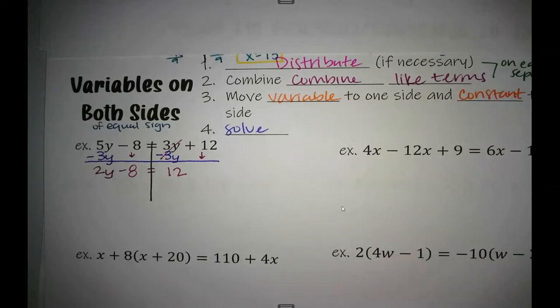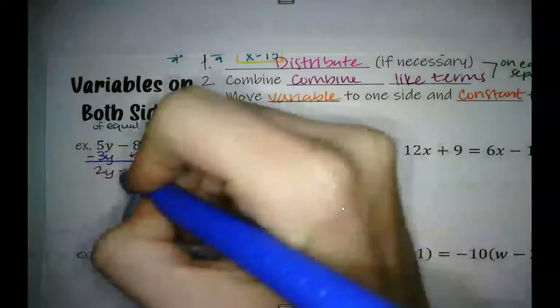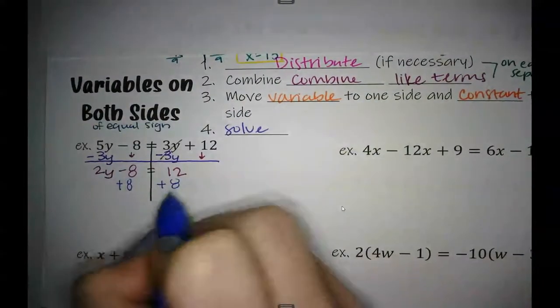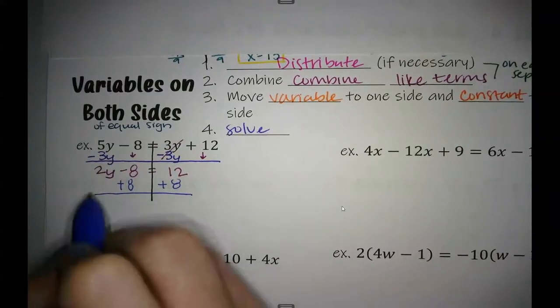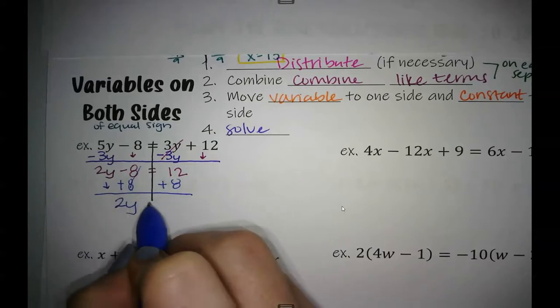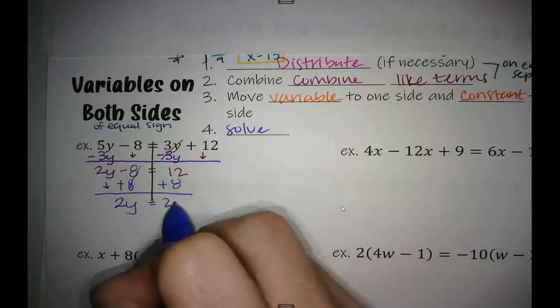Now here, you can say I'm just at a two-step equation. And this is what we've been doing. So we're going to get our constant on the other side by doing the opposite. Right now, it's being subtracted and we're going to add it. So nothing happened to this 2y, so we're left with 2y. Negative 8 plus 8 gets rid of it, equals, we got 12 plus 8. That gives me 20.